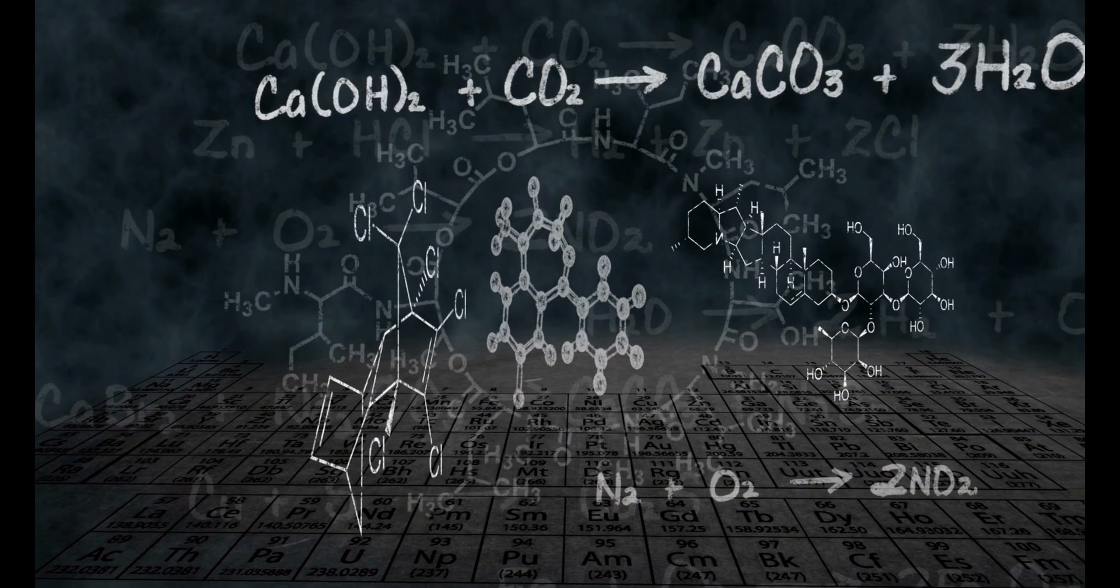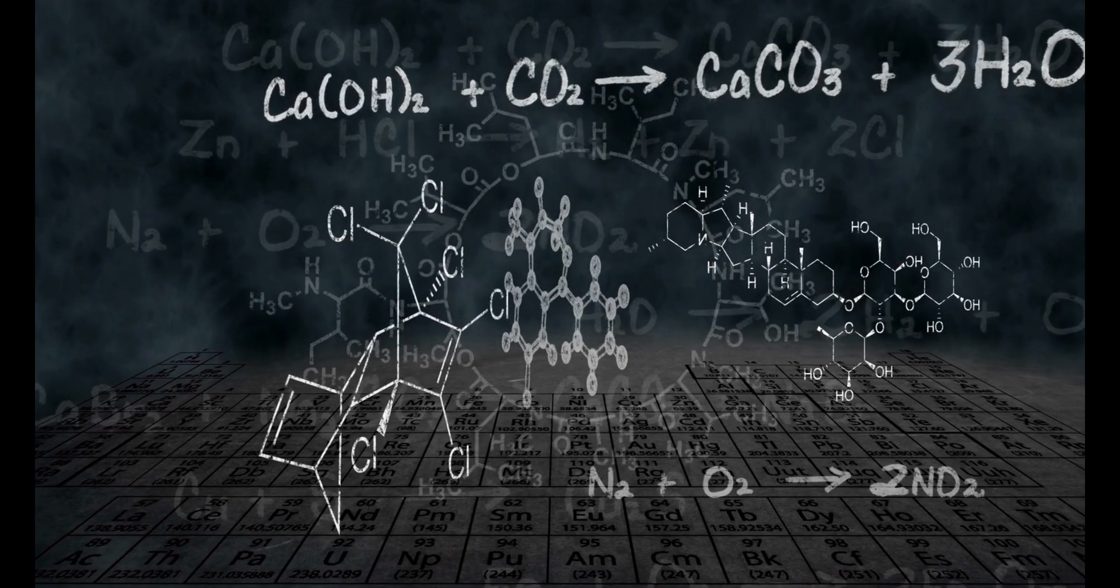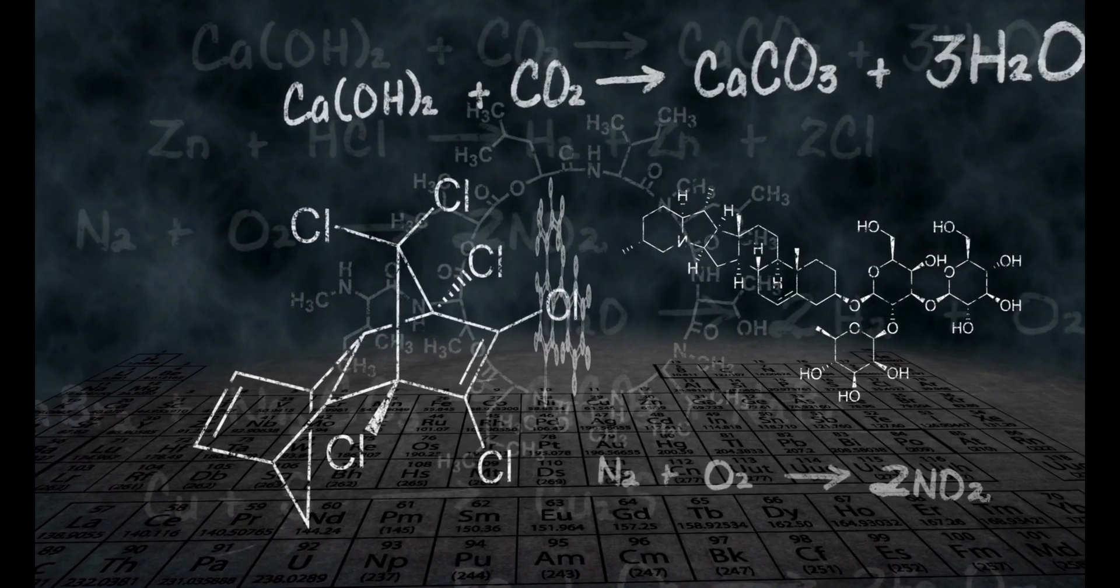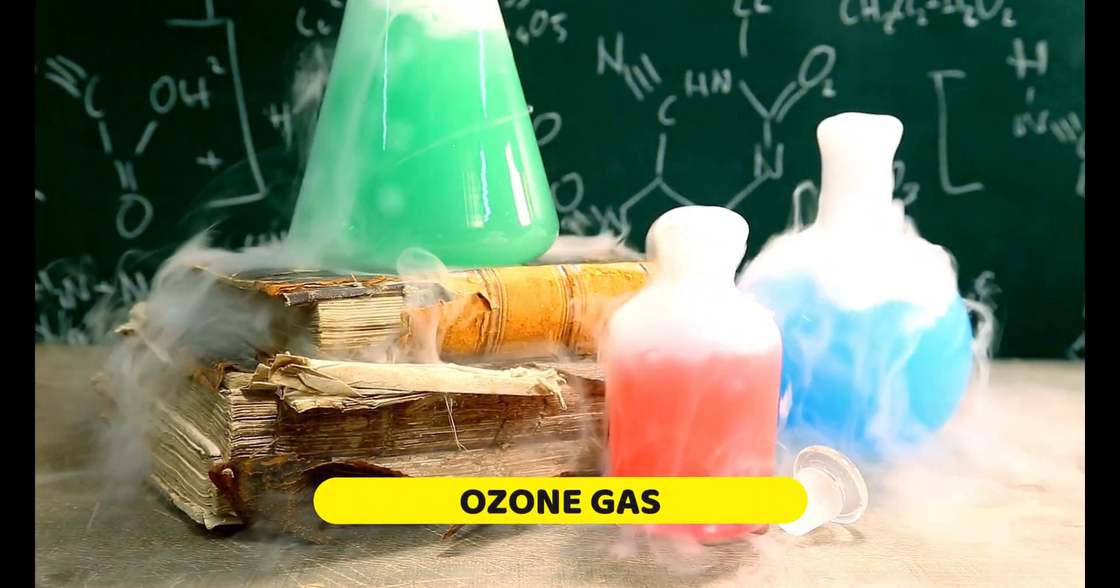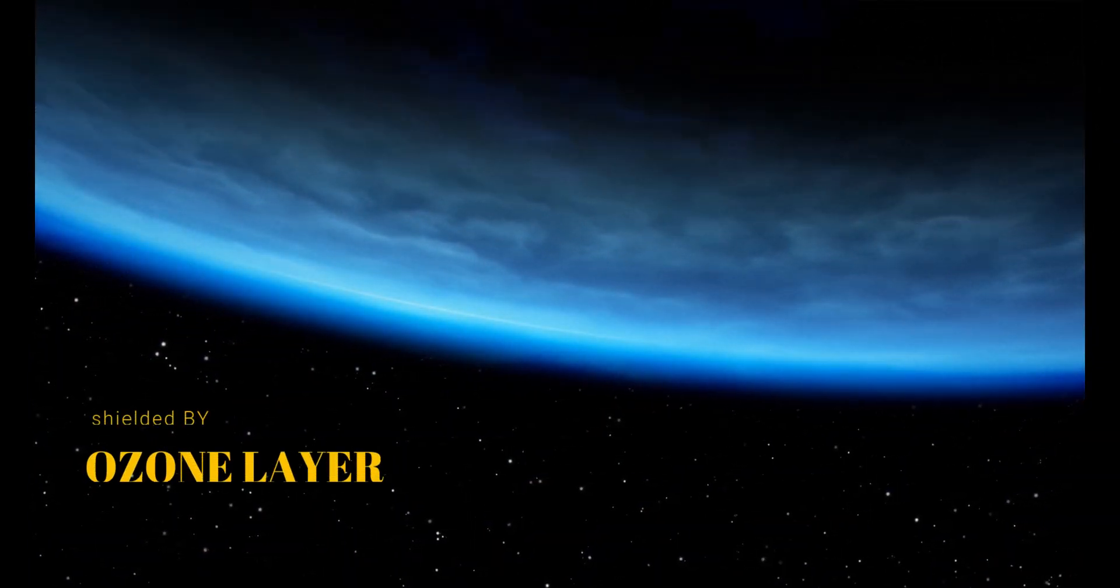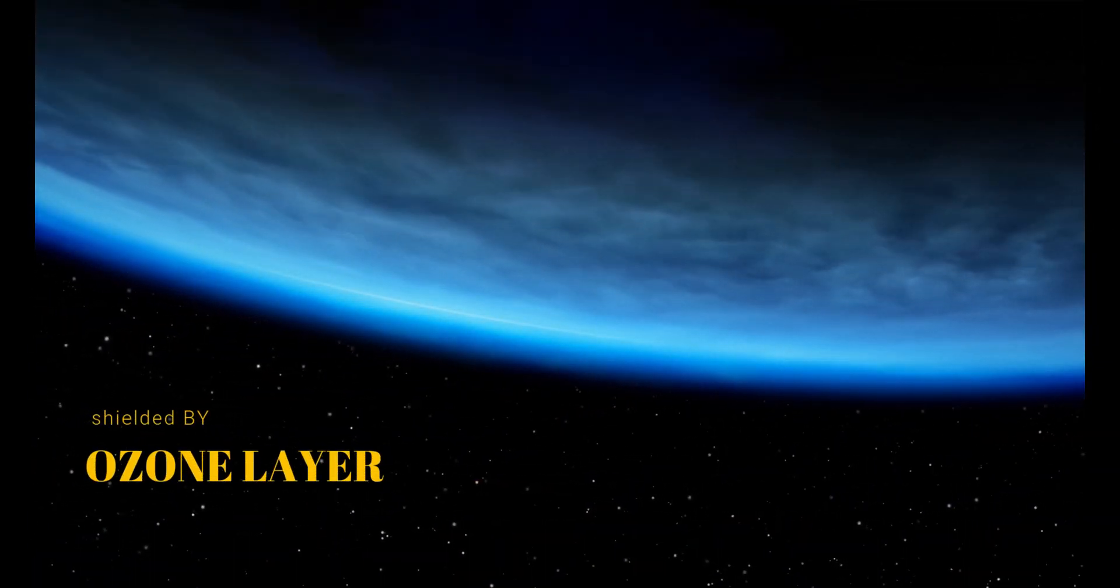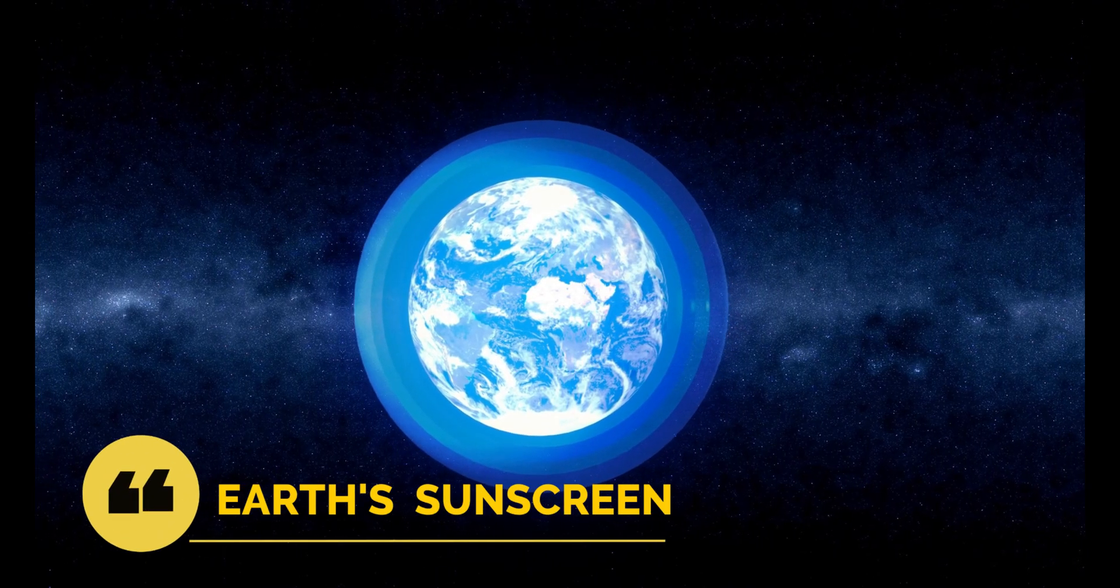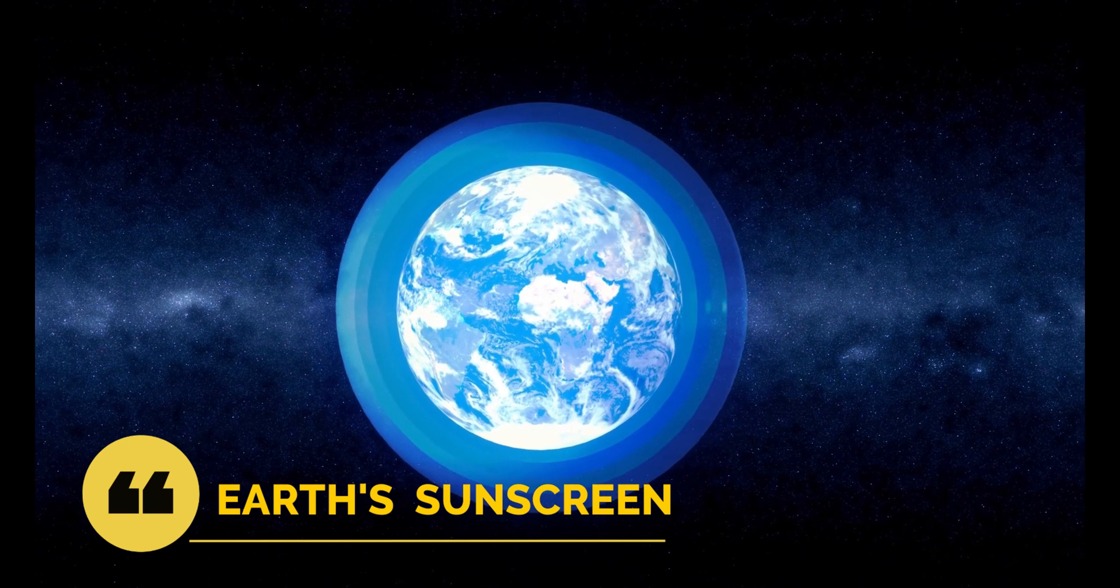But there's a solution. Chemical reaction between oxygen molecules and ultraviolet rays form a poisonous gas, ozone. The thin layer of ozone that surrounds the Earth acts as a shield, protecting the planet from harmful UV radiation. Wow! The Earth's natural sunscreen.